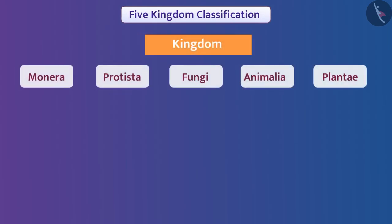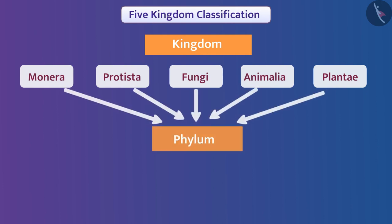It has been observed that within any kingdom there are also organisms which differ from each other in terms of specific characteristics. That is why each kingdom is again classified into subgroups.